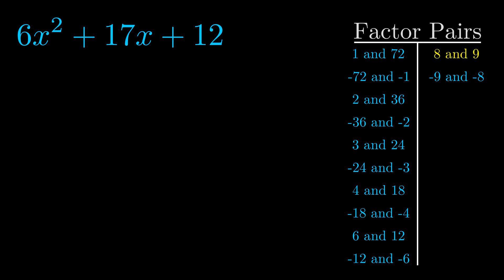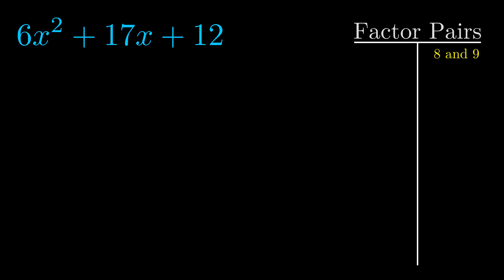And really this is the only factor pair that we need. Now once we have this factor pair, what we want to do is use it to split up the b value.